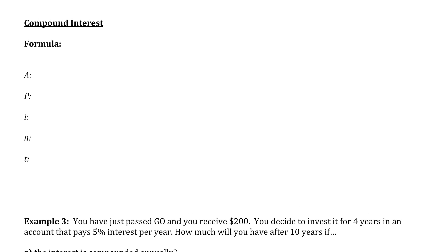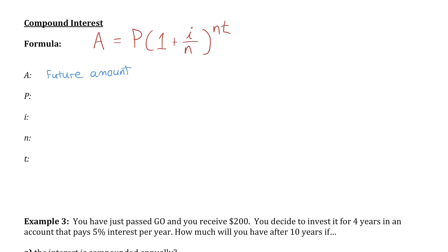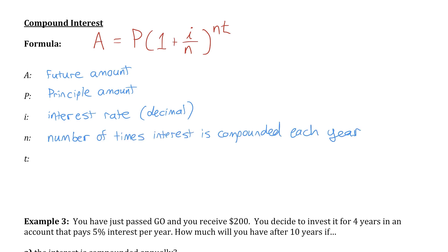Let's now move on to the compound interest section of this lesson. If we're calculating compound interest, we follow the formula: A equals the principal amount P, times one plus the interest rate divided by the number of compounding periods in a year, all to the power of the number of compounding periods in a year multiplied by the number of years. A is our future amount; P is the principal — the initial amount invested; I is the interest rate as a decimal; N is the number of times interest is compounded each year; and T is the number of years.